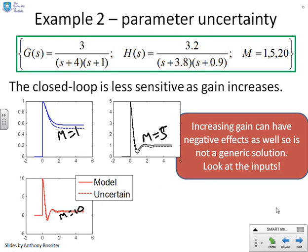There's the inputs. Again, you can see M equals one, the input only goes up to one. M equals five, it goes up to five. M equals ten, it goes up to ten. And again, you can also see the increasing oscillation in the inputs. So nothing is for free.